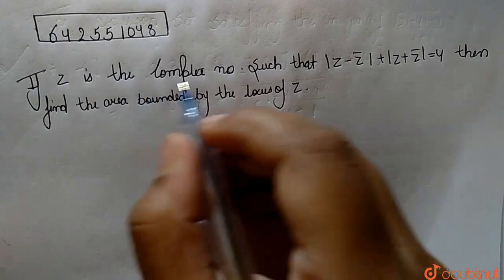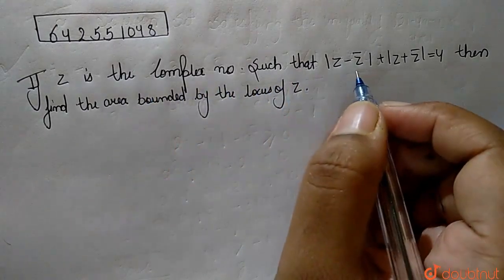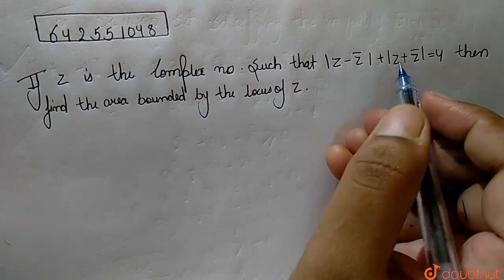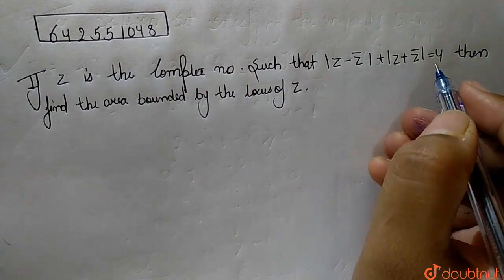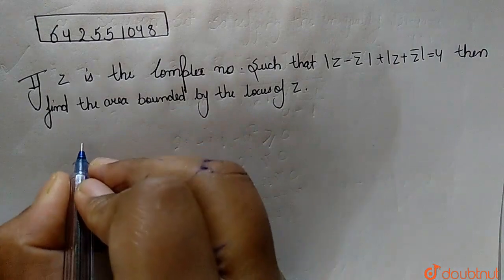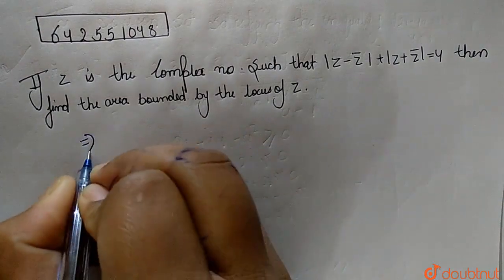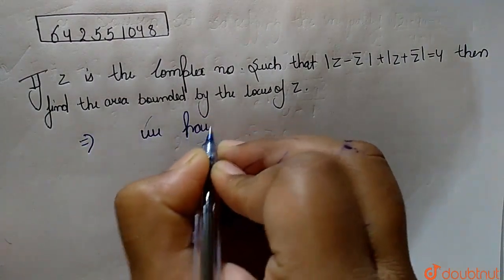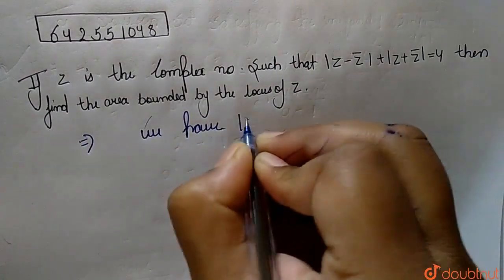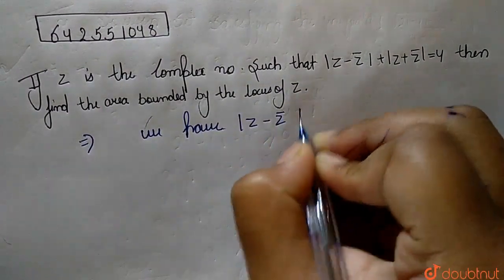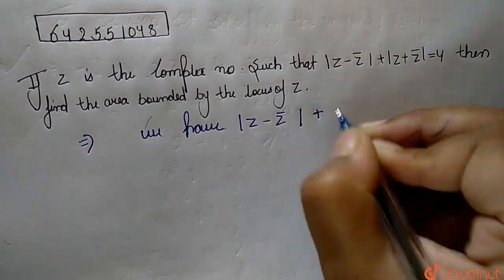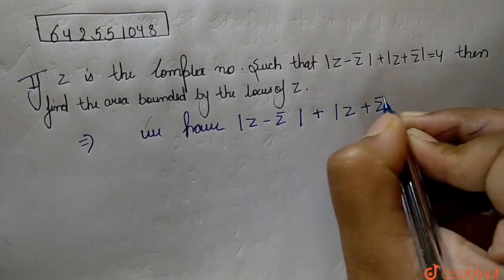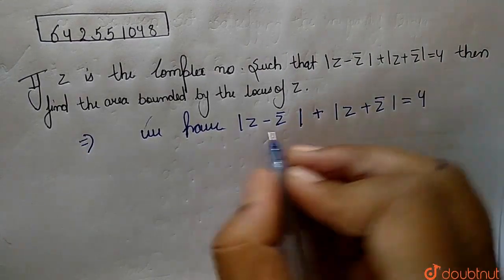The question here is: if z is the complex number such that |z minus z-bar| plus |z plus z-bar| is equal to 4, then the area bounded by the locus will be. So, here we have given that the value of |z minus z-bar| plus |z plus z-bar| is equal to 4.